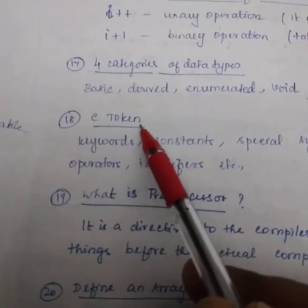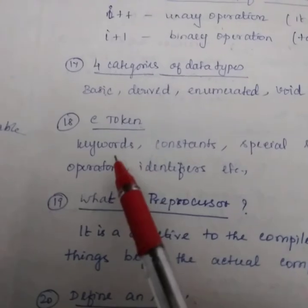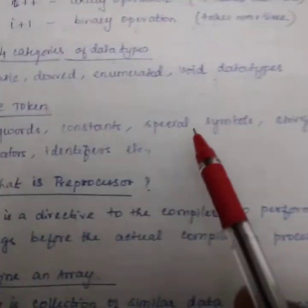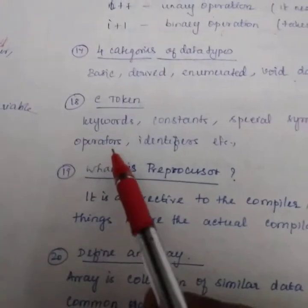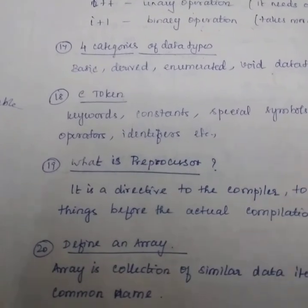C token. It is a very important thing. C tokens include keywords, constants, special symbols, strings, operators, identifiers, etc.